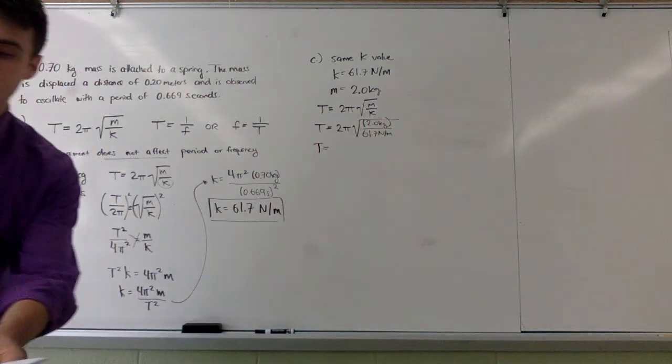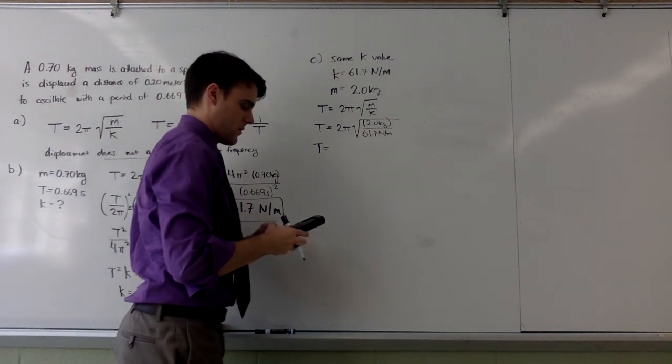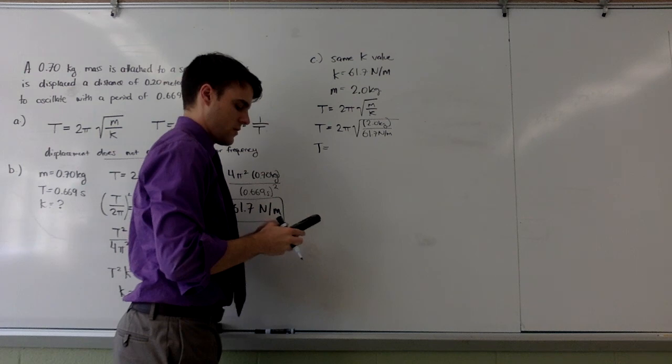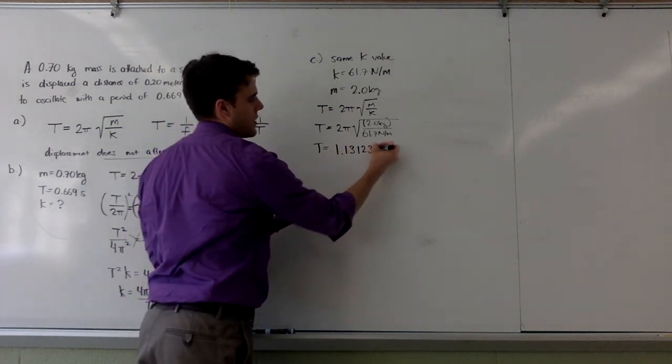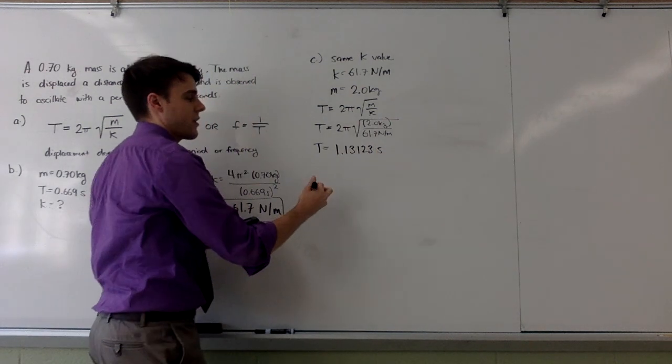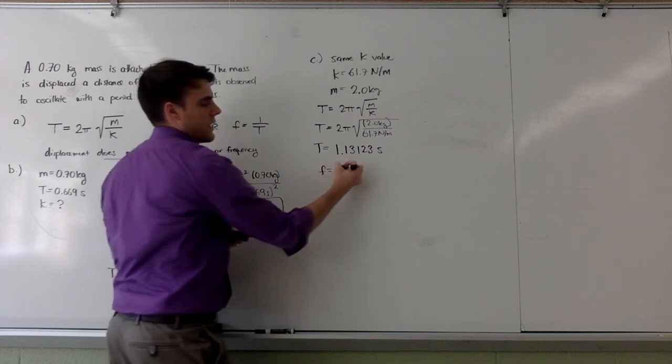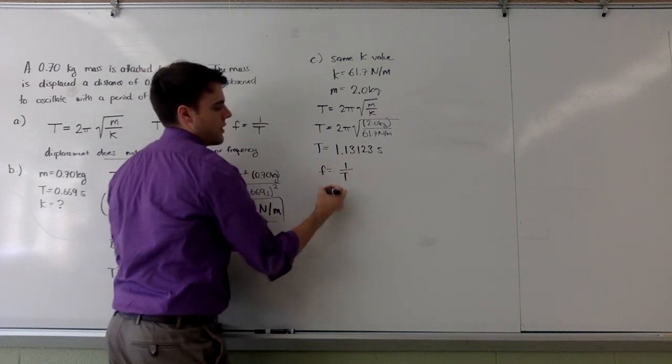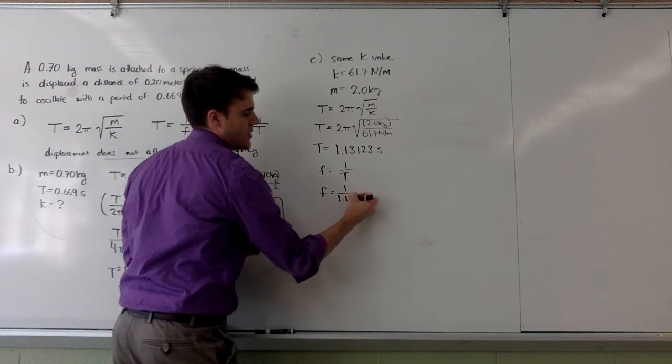And pulling out my calculator yields me a period of 1.13123 seconds. I'm not going to round until the very end. Last step would be frequency is the inverse of period. So, frequency will be 1 over this 1.13123.